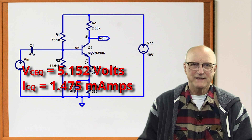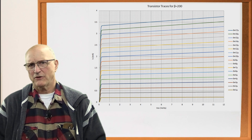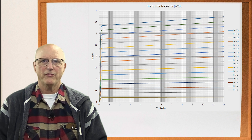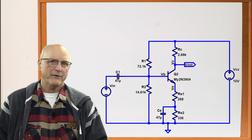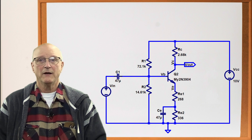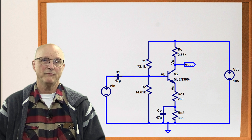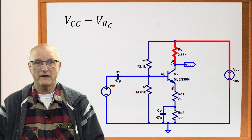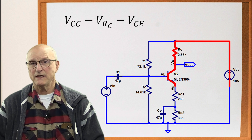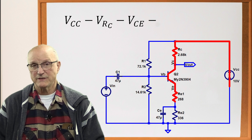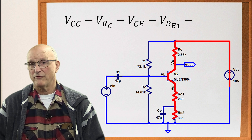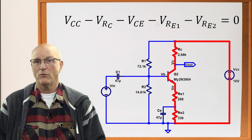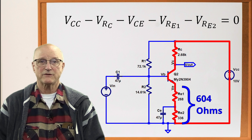Now let's create the DC load line. Here is the family of transistor curves we're going to be using. I generated this family specifically for a DC current gain of 200 using a 2N3904 transistor. We begin the process of creating the DC load line by writing the Kirchhoff's voltage equation around the collector emitter circuit. We get VCC minus the voltage across the collector resistor VRC minus the collector emitter voltage VCE minus the voltage across the top emitter resistor VRE1 minus the voltage across the lower emitter resistor VRE2 equals zero. Because the capacitor is invisible to DC, we can consider the two emitter resistors as a single resistor of 604 ohms.